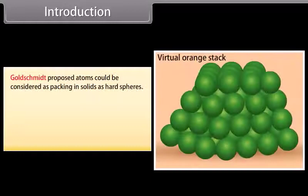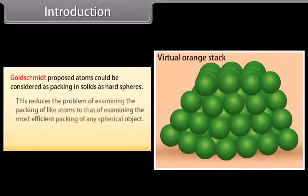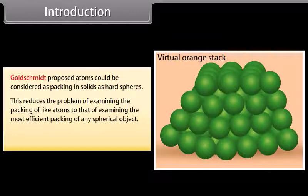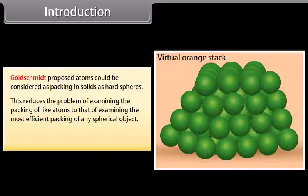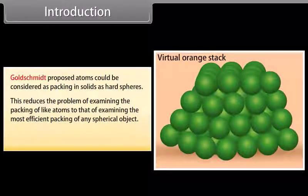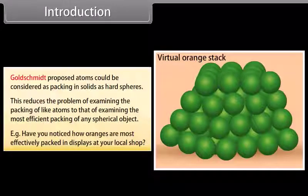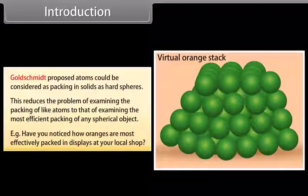Goldschmidt proposed that atoms could be considered as packing in solids as hard spheres. This reduces the problem of examining the packing of like atoms to that of examining the most efficient packing of any spherical object. For example, have you noticed how oranges are most effectively packed in displays at your local shop?